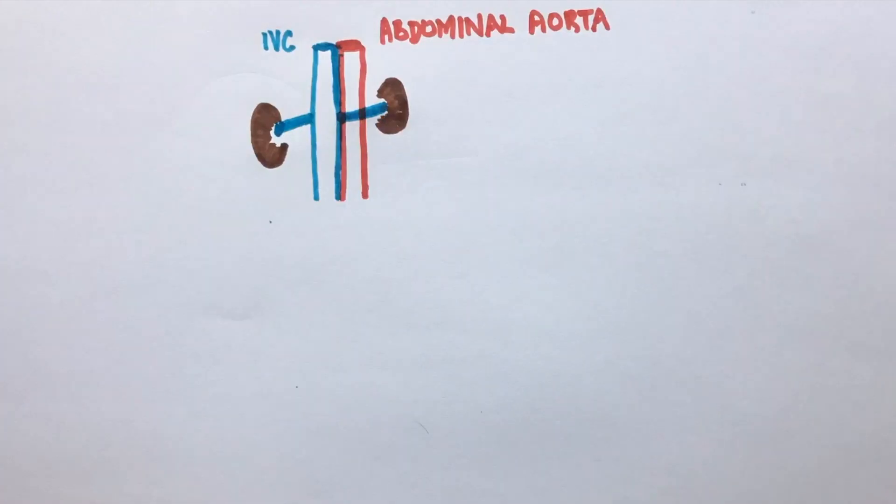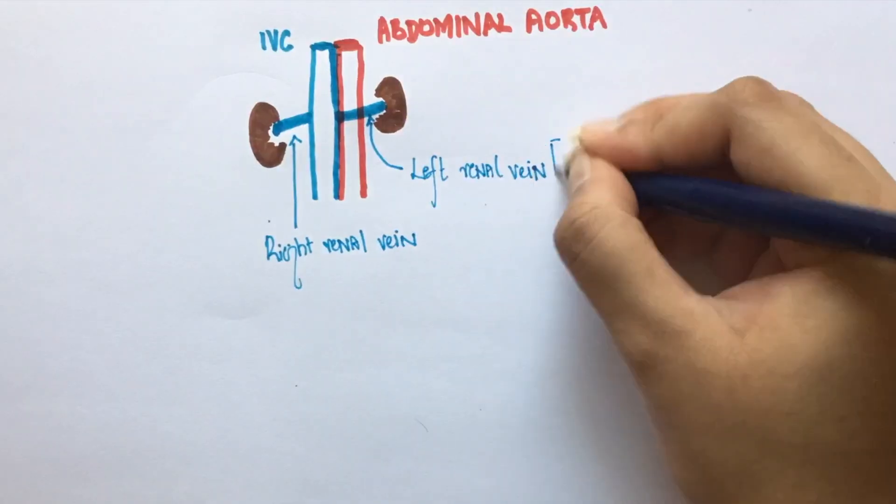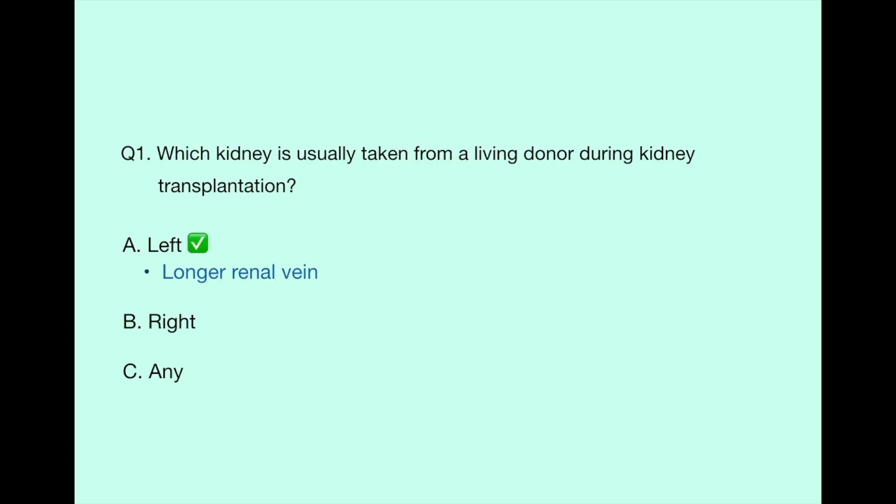These are the two kidneys. As you can see, the inferior vena cava is closer to the right kidney, so the right renal vein is shorter compared to the left renal vein, which has to travel all the way from here to this kidney. Since the left renal vein is longer, it eases implantation during a transplant. This is the reason why the left kidney is preferably taken from a living donor during kidney transplantation.